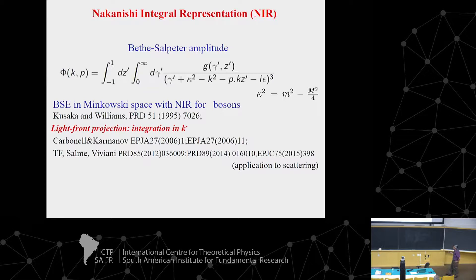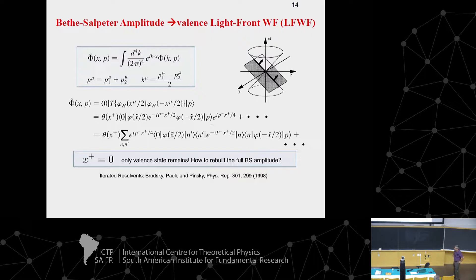This was introduced by Kusaka and Williams, who had success in solving the Bethe-Salpeter ladder for bosons. This was further elaborated by Carbonell and Karmanov, who allied this technique to the light-front projection and matched the valence wave function. To connect the Bethe-Salpeter amplitude with the light-front wave function — the light-front wave function is defined on the hyperplane tangent to the light cone, x-plus equals zero — one can relate the valence wave function by projecting the Bethe-Salpeter amplitude onto this hyperplane.